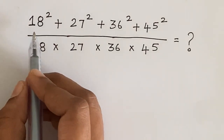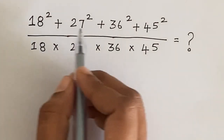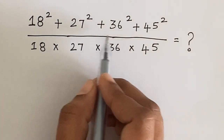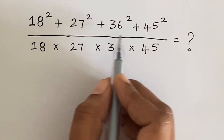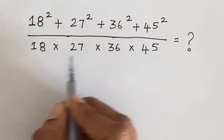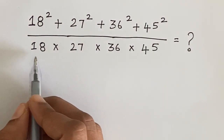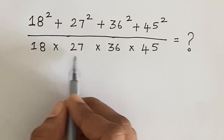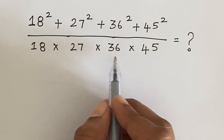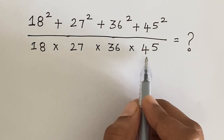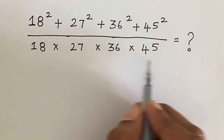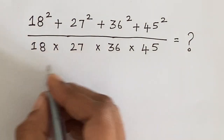Hi, let's solve this nice simplification problem: 18 squared plus 27 squared plus 36 squared plus 45 squared, whole divided by 18 times 27 times 36 times 45. Let's solve this.